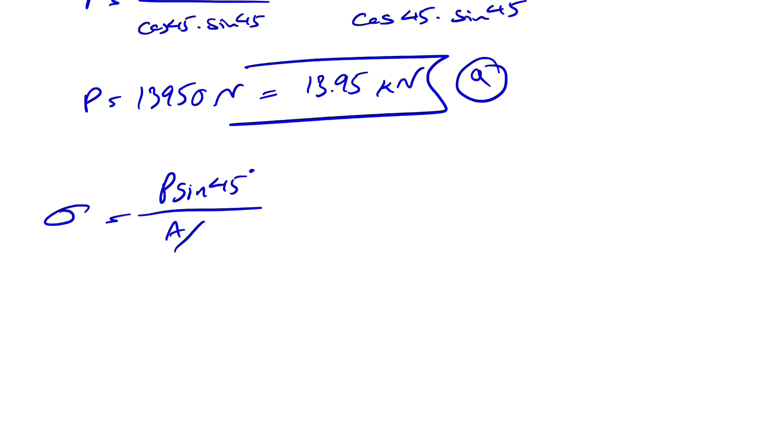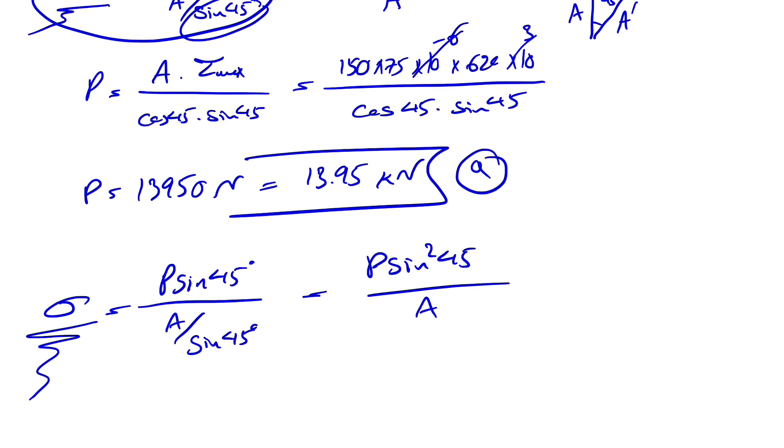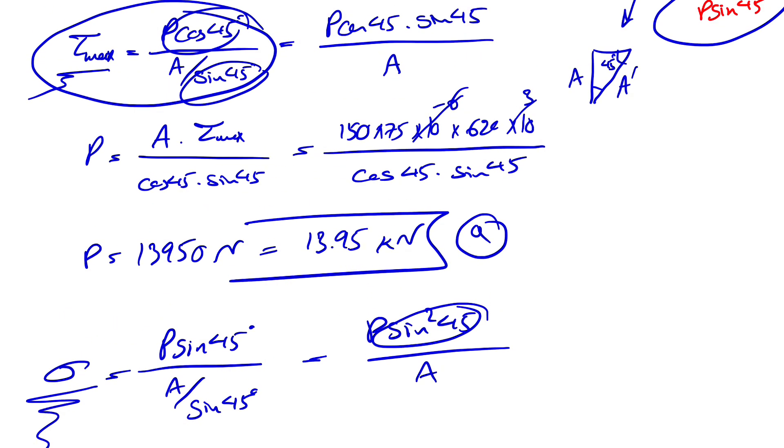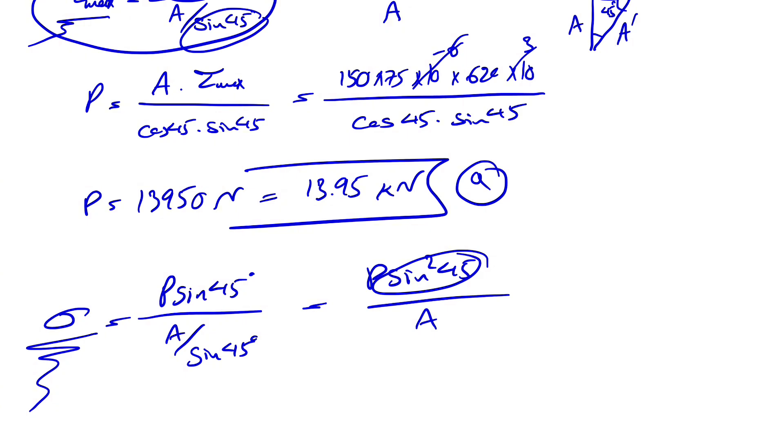P sine of 45 degrees divided by A over sine of 45 degrees. And since the value of sine and cosine is the same, basically, because this will be equal to P sine squared of 45 degrees over A, which is exactly what we have here. We know cosine and sine are the same. So sine squared is equal to sine times cosine.